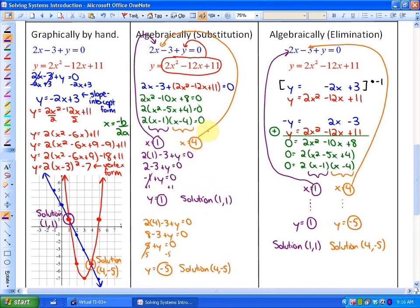When I substitute 4 into one of the originals, 2 times 4 minus 3 plus y and solve for y, I get y equals negative 5. So when x equals 4, y equals negative 5, which represents the point 4, negative 5. That's your other solution. That's the method of substitution.